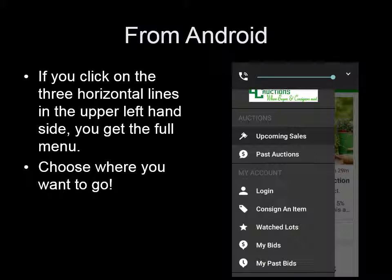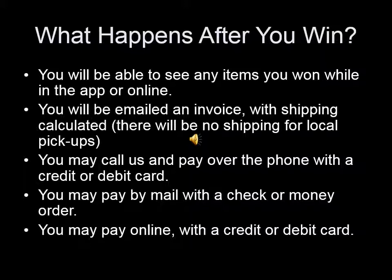The auction ending the soonest will be what shows up first. If you are the winner of any lots, you will be able to see that as you scroll through. You will also get an invoice emailed to you with a list of all your items. You can pay from that invoice through the link, or you can give us a call. You can always pay when you pick up.